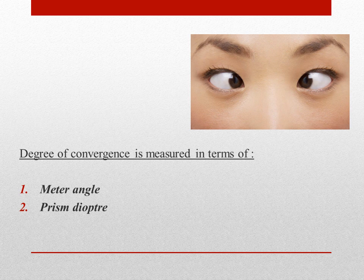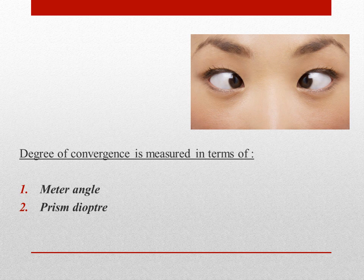Meter angle is the reciprocal of the fixation distance. For example, if the object is situated one meter away from the patient, then the patient is making one degree of convergence, because it is the reciprocal of one meter of distance which gives you one degree. That means the patient is converging by one degree in order to fixate at a target which is one meter away from him. Now if I have to express the same in prism diopters, then I have to multiply that meter angle value with the IPD of the patient. For example, if the IPD of the patient is 60 millimeters, I convert that into centimeters — that becomes 6 cm. So 1 × 6 = 6, meaning 6 prism diopters of convergence. So for a patient to fixate a target one meter away, he has to converge his eyes either by one degree or by 6 prism diopters.